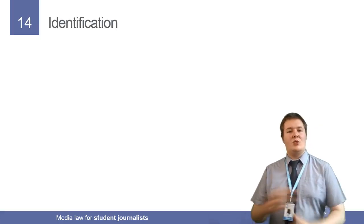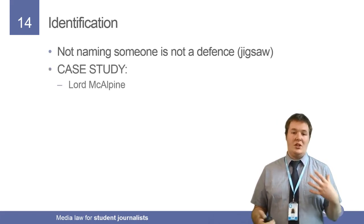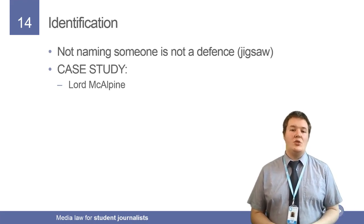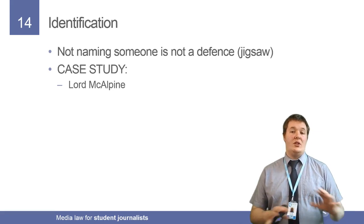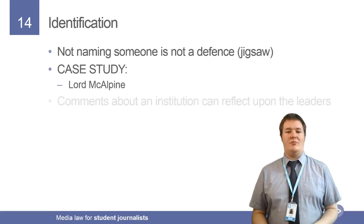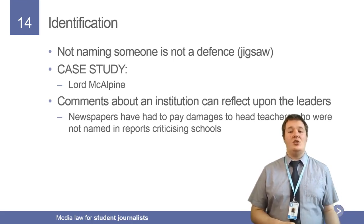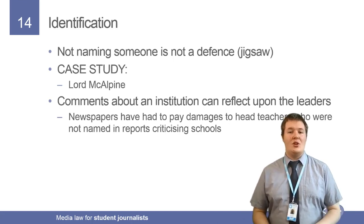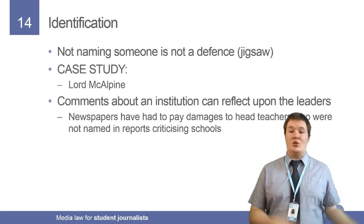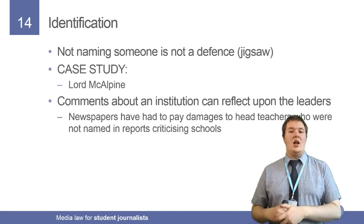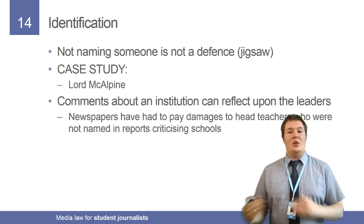Not naming someone isn't a defence under jigsaw identification. The main case study is Lord McAlpine, who was recently wrongly identified by Newsnight as involved in child abuse. Even though they didn't name him, they gave enough information that people could piece together it was him, and then it went on Twitter and Sally Berker was sued for a large amount of money. Comments about an institution can also reflect upon its leaders — newspapers have had to pay damages to head teachers not even named in reports criticising schools, because the head teacher could argue that by criticising the school you're criticising them as leader. You have to be careful, particularly if you're saying bad things about your union, as the chief exec or president could say the article reflects badly upon them.